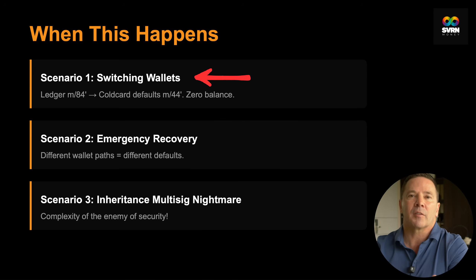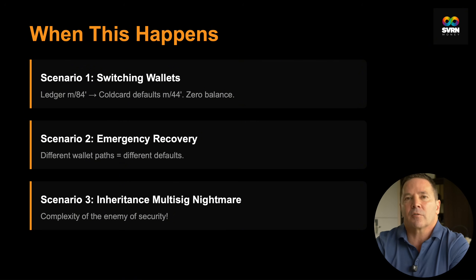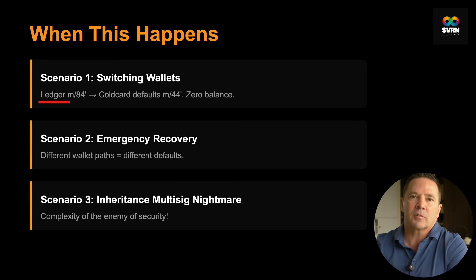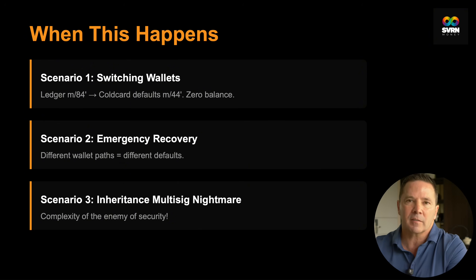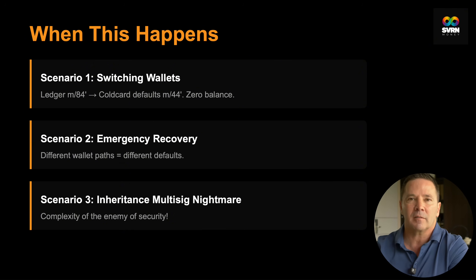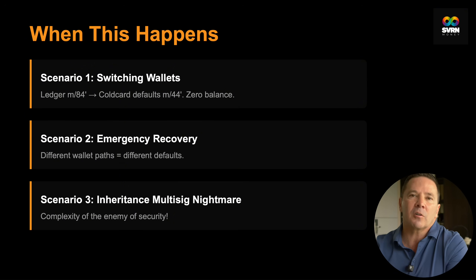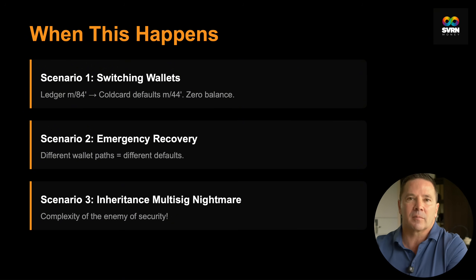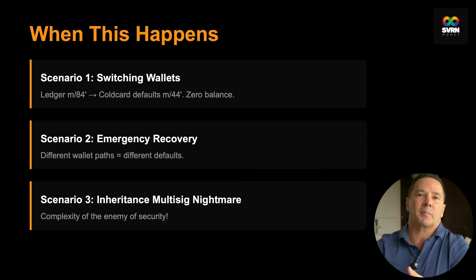Scenario one: the heart attack migration. You decide to upgrade your security, moving from a generic Ledger to a Bitcoin-only ColdCard. You diligently enter your 24-word seed phrase, confident your funds are safe. You check the balance — zero. Panic sets in. Did you write those words down wrong? Was your seed phrase compromised? No. Your Ledger was using the native SegWit derivation path M/84, but the ColdCard defaulted to legacy M/44. Your money is sitting right there, invisible because your device is looking down the wrong path.